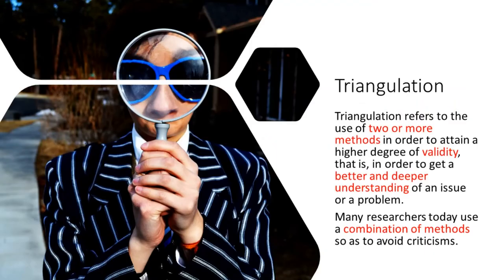Let us now look at triangulation. Triangulation refers to the use of two or more methods in order to attain a higher degree of validity — that is, to get a better and deeper understanding of an issue or problem. Many researchers today use a combination of methods so as to avoid criticisms, since each method has its own disadvantages. It is therefore good to use more than one method so that the researcher can maximize the benefits of each method and minimize the disadvantages of a single method.